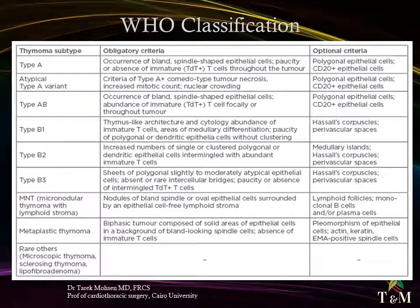Classification by thymoma subtype with obligatory and optional criteria: Type A — occurrence of bland spindle-shaped epithelial cells, poor or absent immature TdT+ T-cells throughout the tumor; optional: polygonal epithelial cells, CD20+ epithelial cells. Atypical Type A variant — criteria of Type A plus comedo-type tumor necrosis, increased mitotic count, nuclear crowding; optional: polygonal epithelial cells, CD20+ epithelial cells. Type AB — bland spindle-shaped epithelial cells, abundance of immature TdT+ T-cells focally or throughout tumor; optional: polygonal epithelial cells, CD20+ epithelial cells.